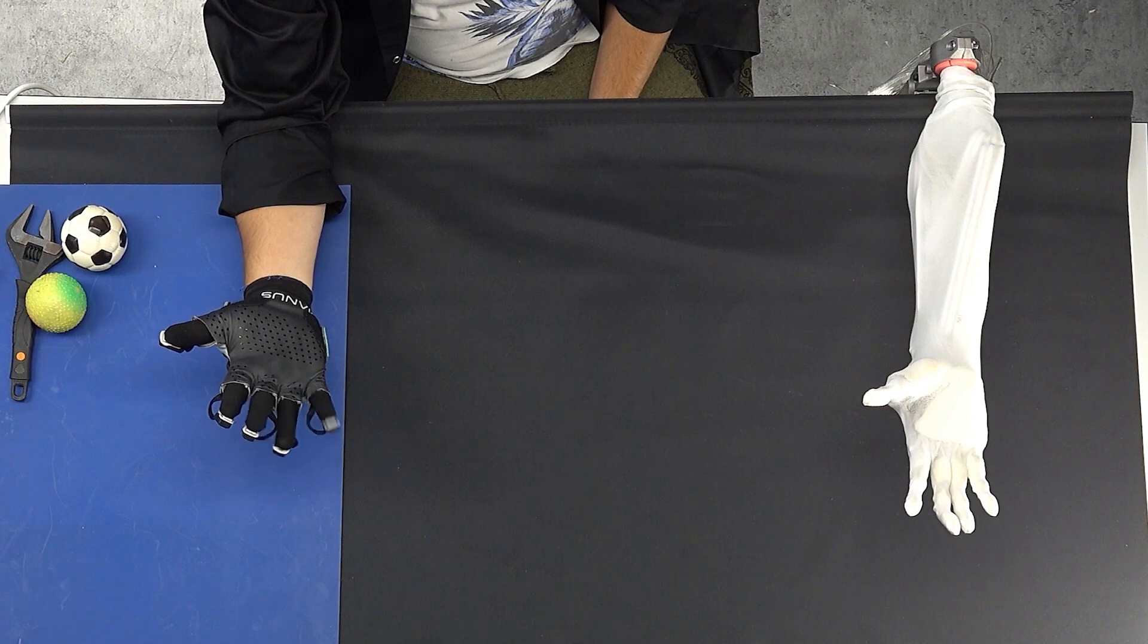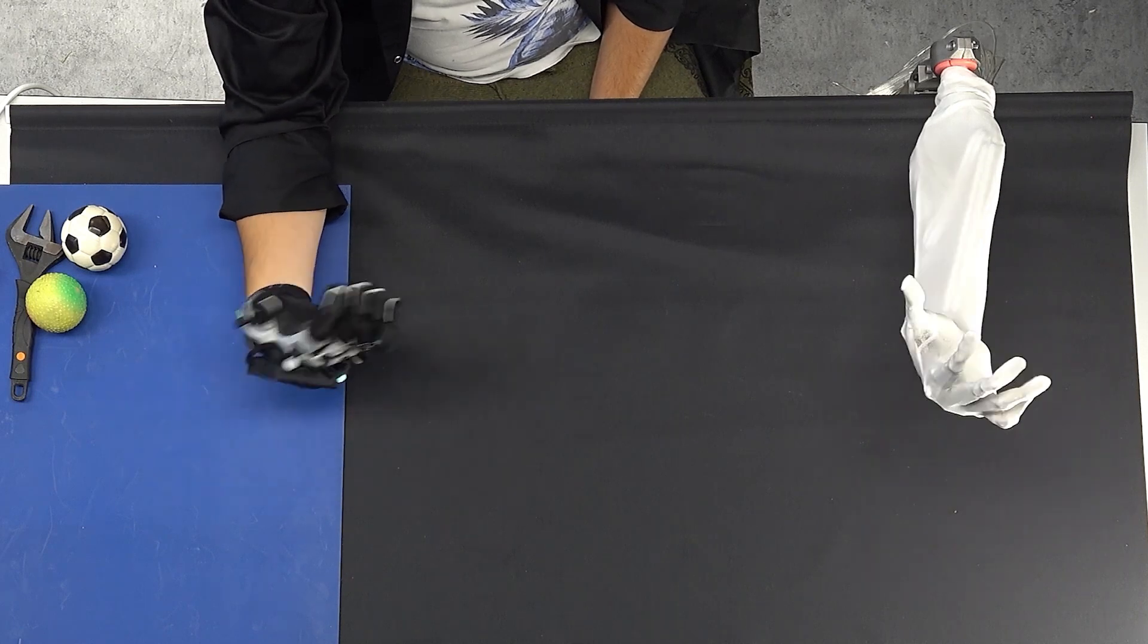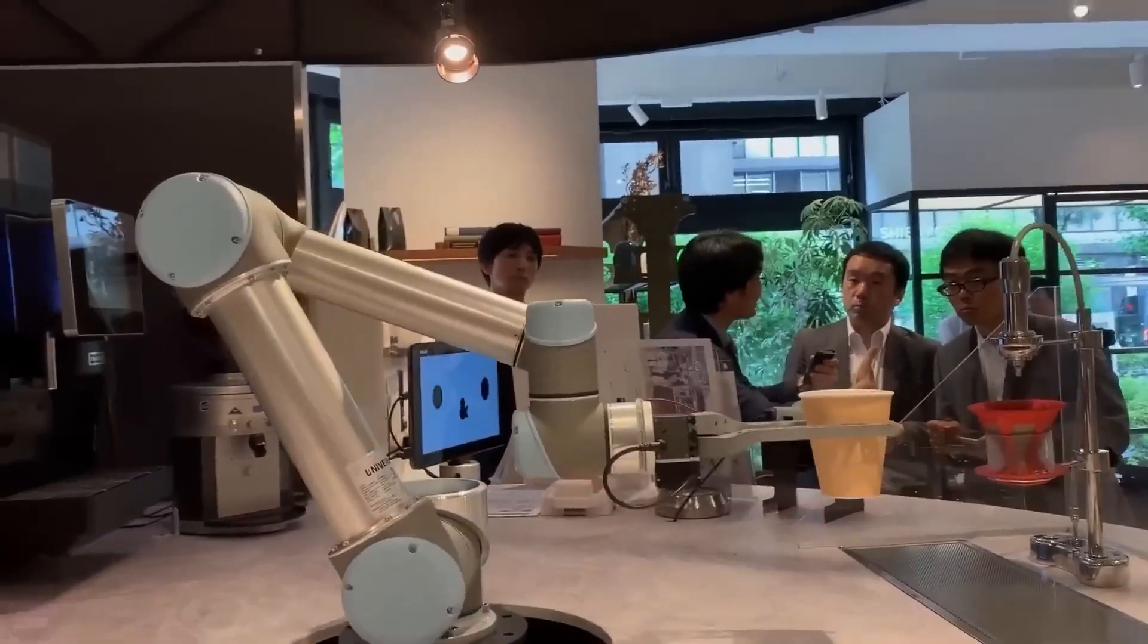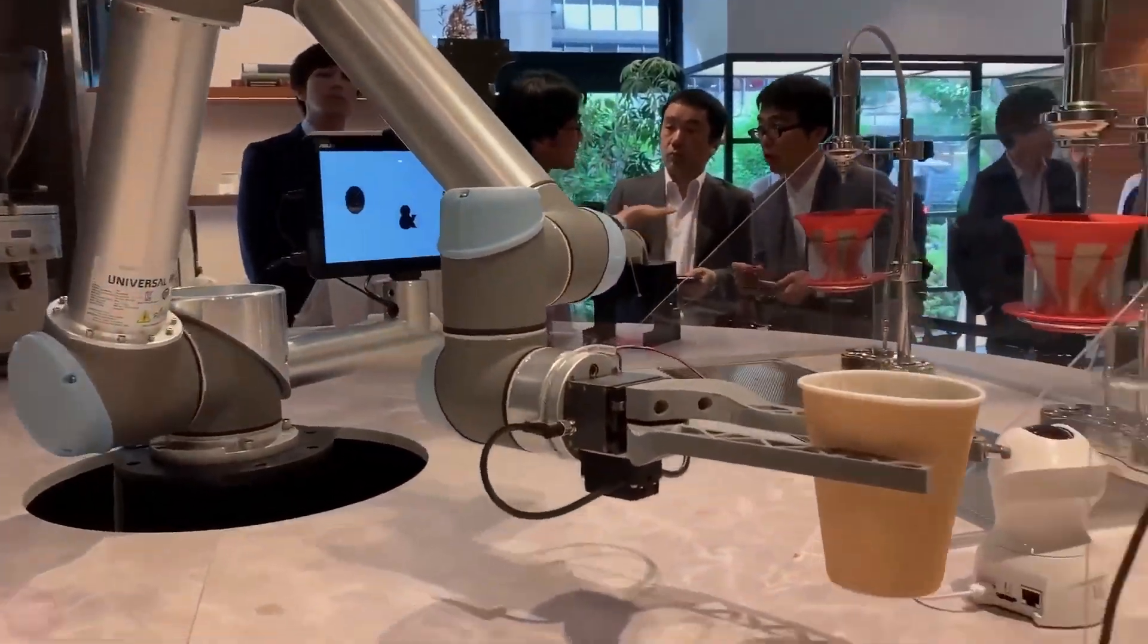This allows Clone Alpha to move in ways that are fluid and lifelike, a sharp contrast to the rigid mechanical motions of traditional robots.